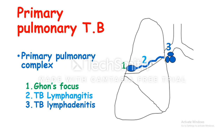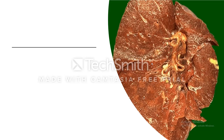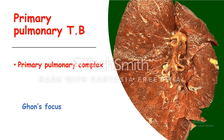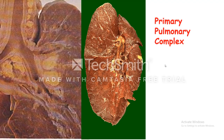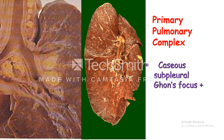We call this the primary pulmonary complex. This is the lung showing the area of Ghon focus, which appears as a pale yellow area of granulomatous inflammation or caseation necrosis, usually in the lower part of the upper lobe or in the upper part of the lower lobe, and it is usually subpleural. What we actually see is this Ghon focus and the hilar enlarged lymph node — we call this the primary pulmonary complex.